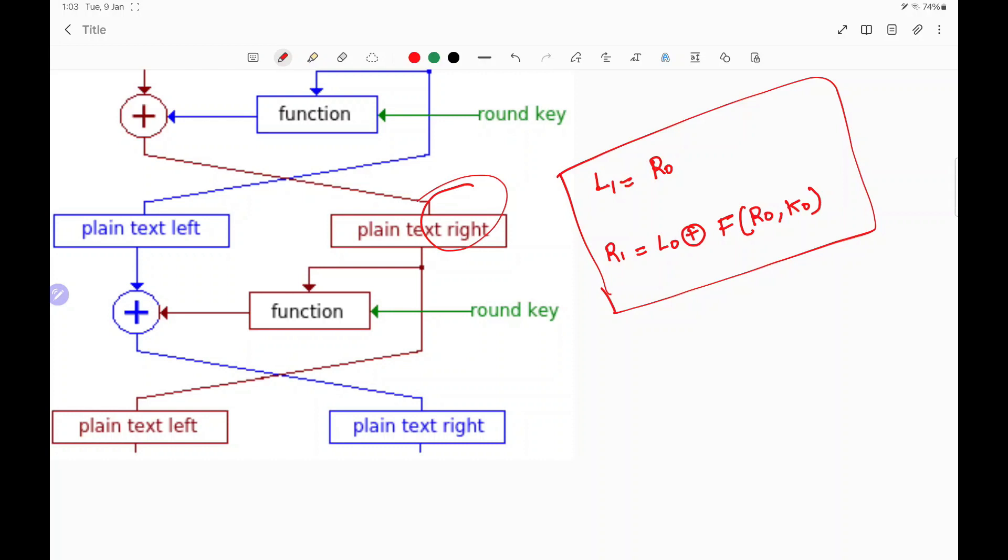So what happens is R1 is nothing but L0 XOR function which takes two inputs that is R0 and K0. And this is nothing but the values corresponding to each round. So if we want to generalize it, it is nothing but LN is nothing but R of N minus 1. Similarly, RN is nothing but L of N minus 1 XOR function involving R N minus 1 comma K N minus 1. So that is how a Feistel cipher works.